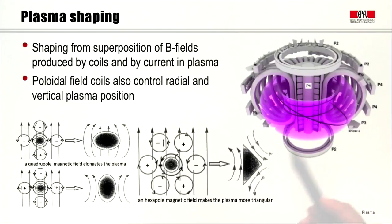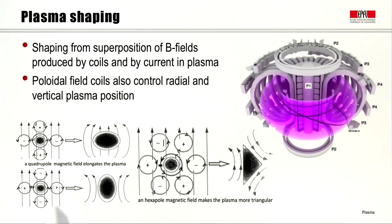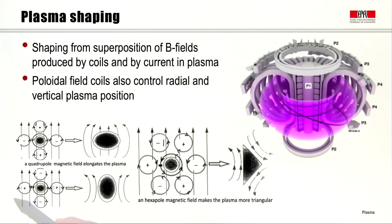Let's look at plasma shaping, which is produced by the outer poloidal field coils. We start from a superposition of magnetic fields produced by coils and by current in the plasma. These outer poloidal field coils — labeled P2, P3, P4 — are used to control the radial and vertical position of the plasma and produce plasma shaping. If we produce a quadrupole field, it elongates the plasma. Depending on the polarity — plus on top and bottom, minus left and right — we get a plasma elongated horizontally; inverting the polarity elongates it vertically.